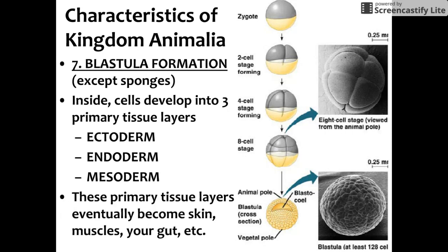These primary tissue layers, or germ layers, are basically your ancestral cells from early embryonic development while you were forming in your mother's womb. Your current skin, muscle, and organ cells are the offspring of those cells from the first nine months of your formation. We're going to talk about those in more detail a little bit later.